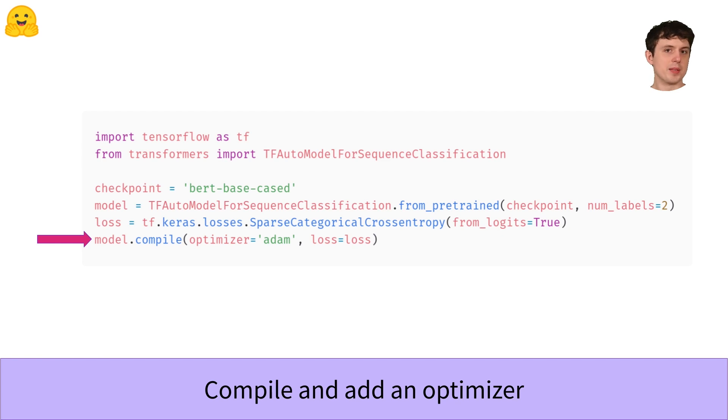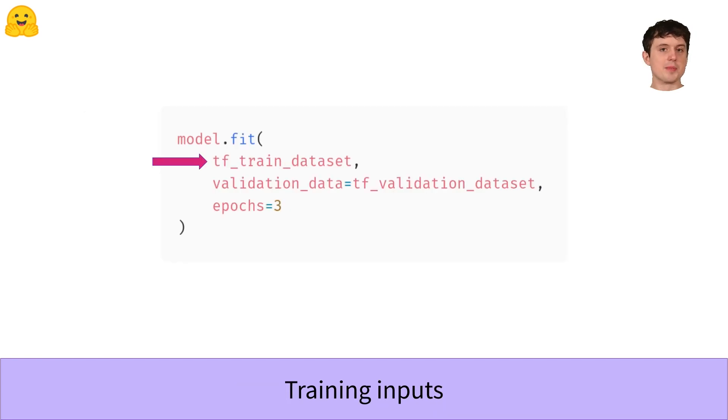So how do you train the model? Again, if you've used Keras before, this is all going to be very familiar to you. But if not, let's very quickly look at what we're doing here. Fit is pretty much the central method for Keras models. It tells the model to train on the data we're passing in. So here we pass the datasets we made in the previous section. The dataset contains both our inputs and our labels. So we don't need to specify separate labels when we're calling fit.